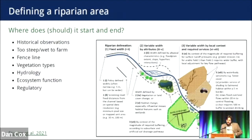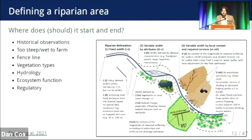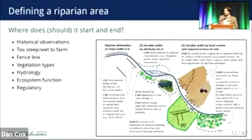They come in a wide range of shapes and sizes and look very different. So the next challenge is: where should a riparian area start and end? This figure highlights some very different ways of defining a riparian area. We can use historical observations — a family that's been on a farm for 100 years has a pretty good idea of where the riparian area starts and stops. There is a lot of power in visual observations; don't ever discount them.